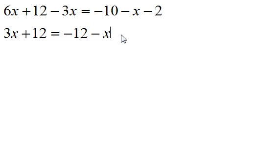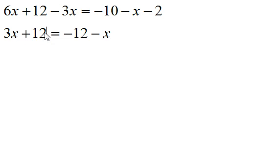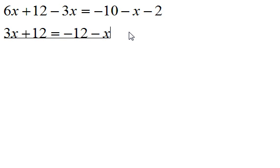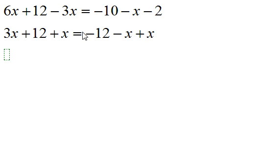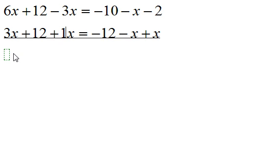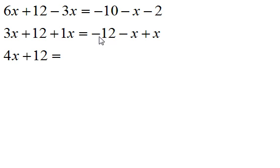And then I'm going to subtract the x because that term is not alike. If you notice, you have variables on the left side and on the right side of the equation. The goal is to have letters on the left side and numbers on the right side. So I'm going to get rid of this minus x by adding x to both sides of the equation. Now combining like terms again: 3x combined with 1x gives 4x, plus 12. On the right side, the minus x and the plus x cancel out, leaving only minus 12.